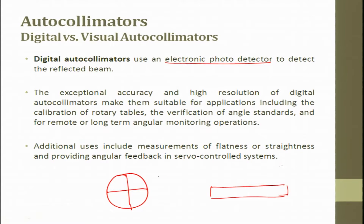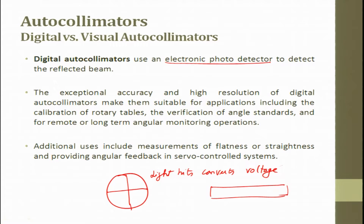A photodiode is nothing but a device where, when light hits the surface, it converts into voltage. From the voltage we try to find out the displacement. It uses an electronic photodetector to detect the reflected beam — the reflected beam from the flat surface wherever you had placed a mirror.